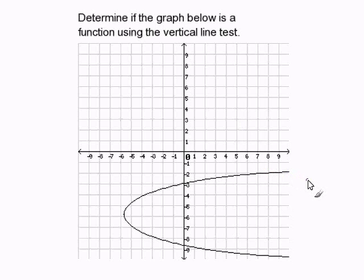Using the vertical line test to determine if a graph is a function. The definition of a function is that for every input, there can only be one output.